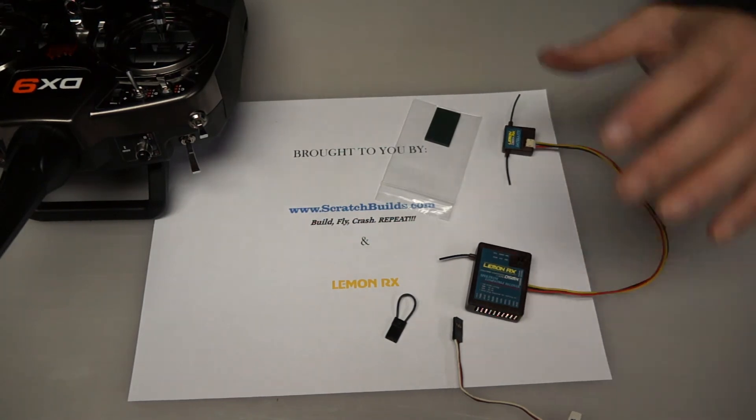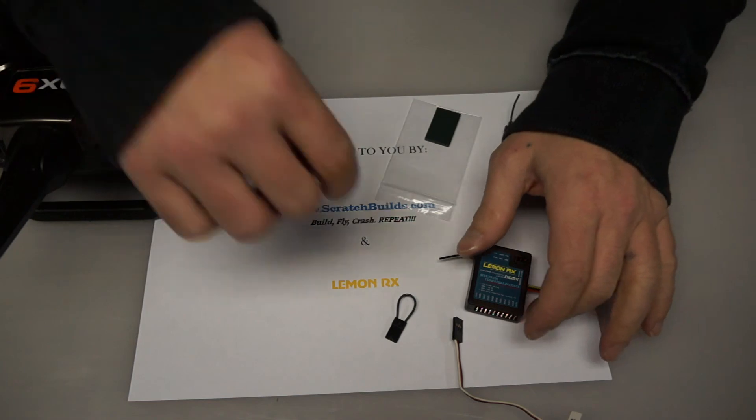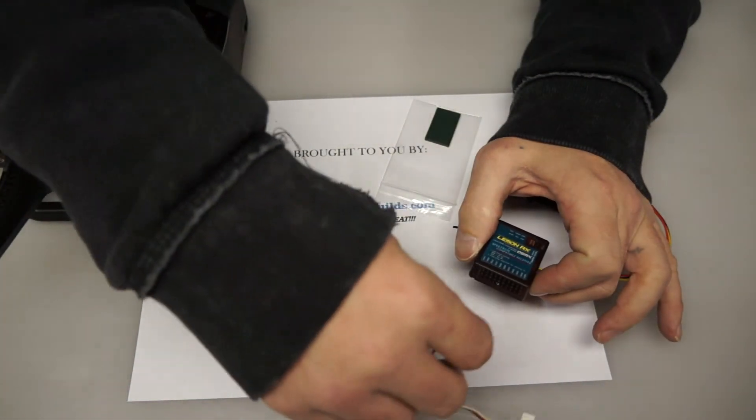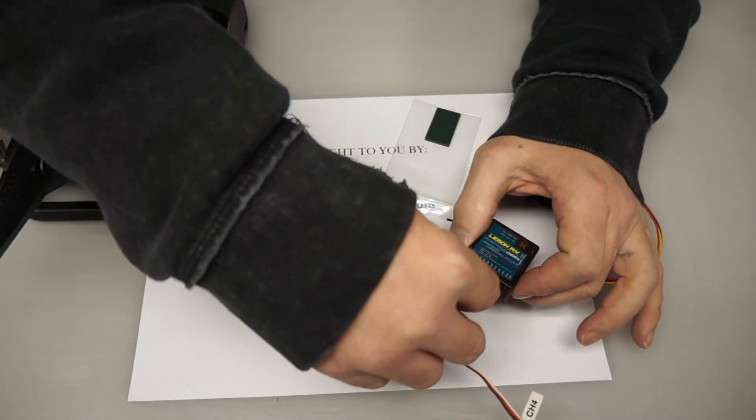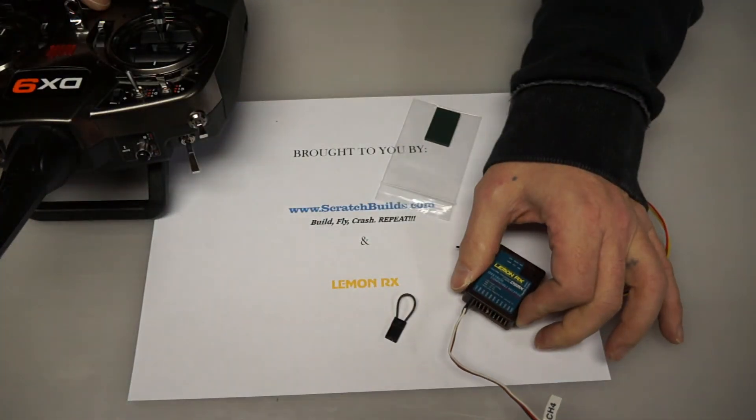Now we want to verify that the receiver and satellite are in fact bound to the radio. So what we're going to do is give the receiver power again through the throttle port. I'm just going to plug in and then we're going to turn the radio on.